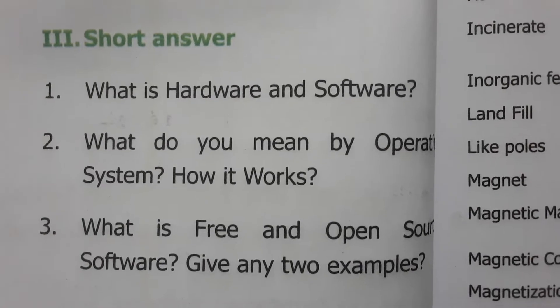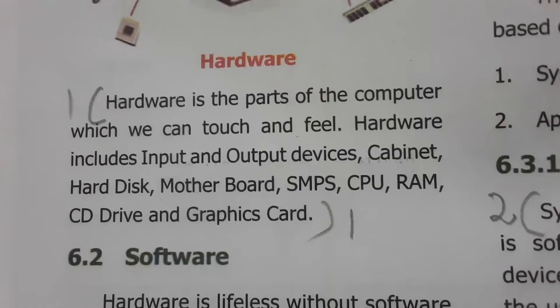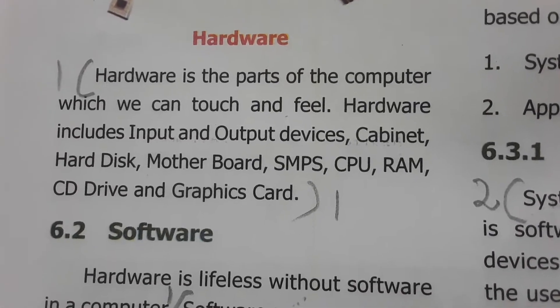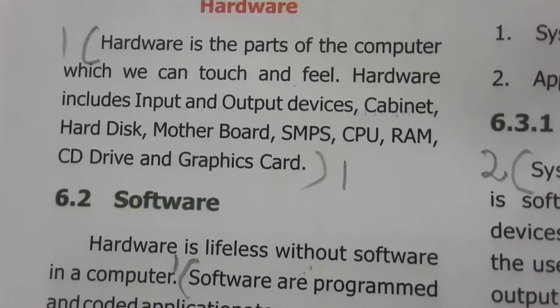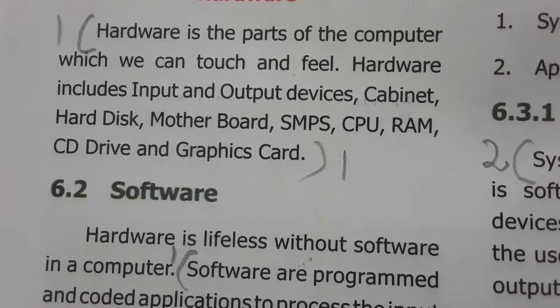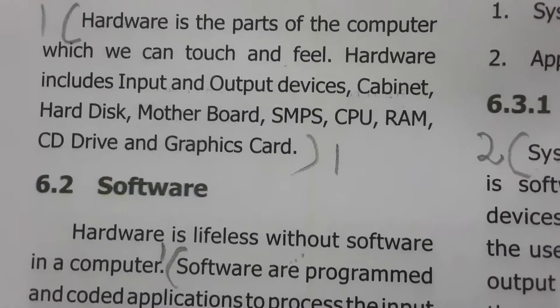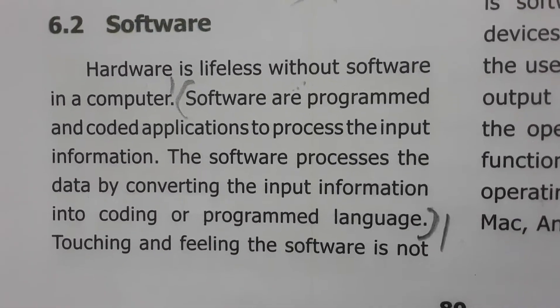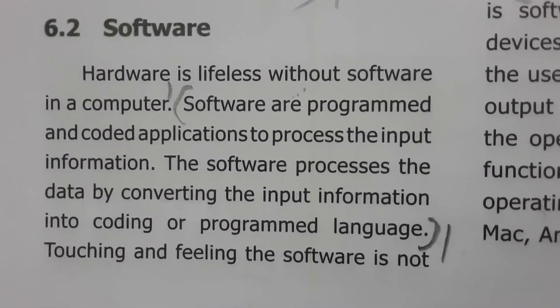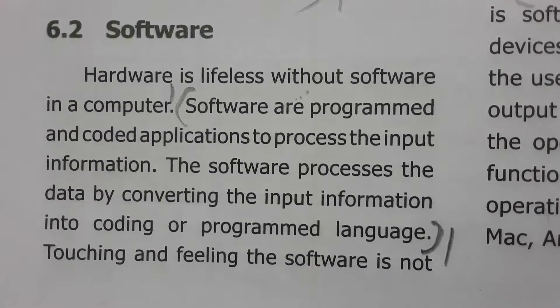Next is the short answer section. What is hardware and software? Hardware is a part of the computer which we can touch and feel. Hardware includes input and output devices, cabinet, hard disk, motherboard, SMPS, CPU (central processing unit), RAM, CD drive, and graphics card. Software is programmed and coded applications to process the input information, converting input data into coding or programming languages.